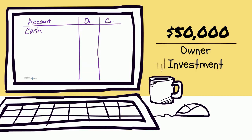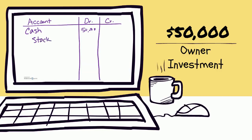Cash is an asset. If an asset is increasing, how do we do that with the debit and credit rules? We need to debit it. The other part of this was equity increasing — this was an additional owner investment, and since we have shareholders, our owner account would be the stock account. Equity is increasing, so to increase an equity account I need to credit it. Now my debits and credits are equal.